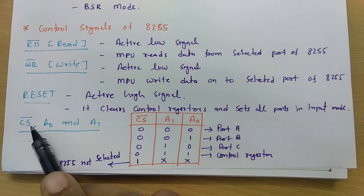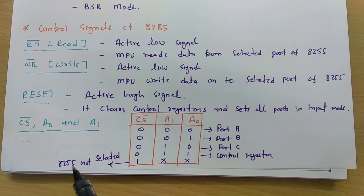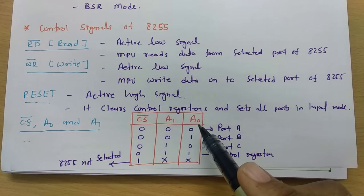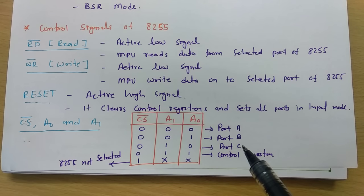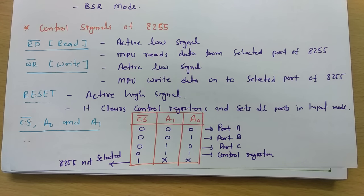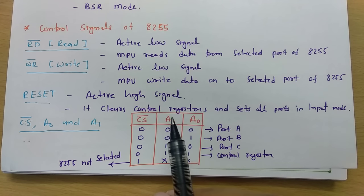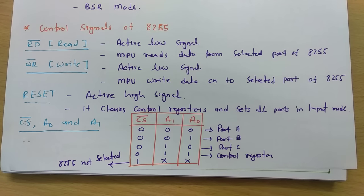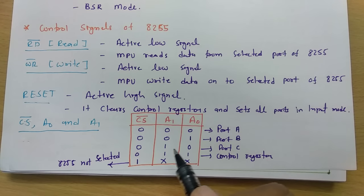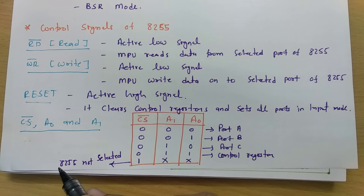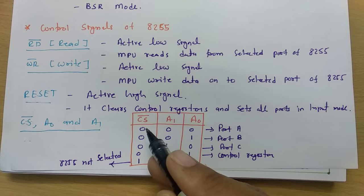There are three more control signals. Chip select: if it is active low, the 8255 chip is selected; if it is 1, the chip is not selected. A0 and A1 select the port: 00 selects port A, 01 selects port B, 10 selects port C, and 11 selects the control register. By selecting the control register we can set the modes of operation of 8255.